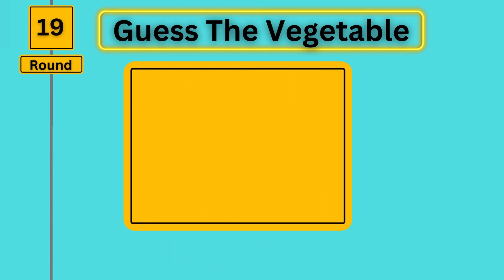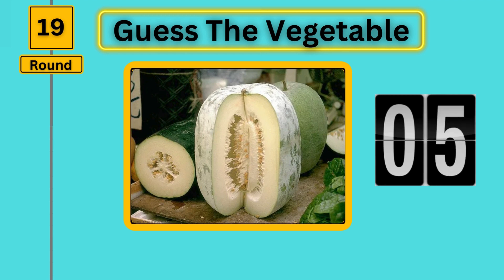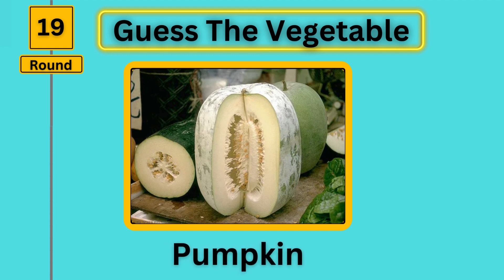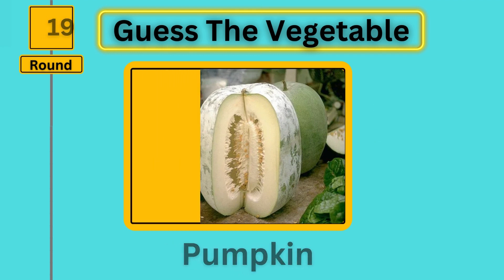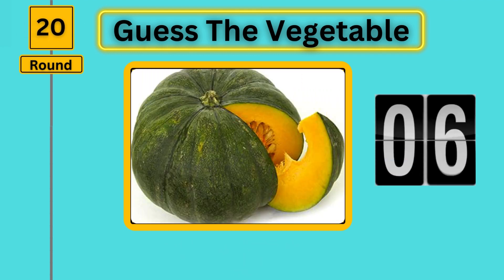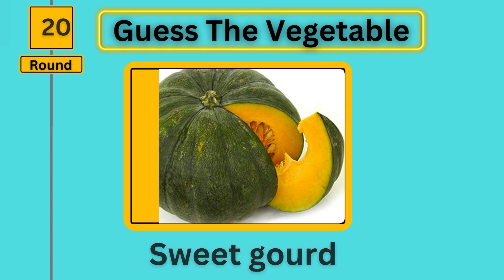Round 19, guess the vegetable. Pumpkin. Round 20, guess the vegetable. Sweet gourd.